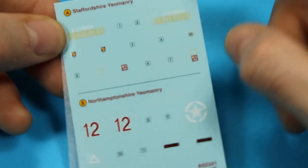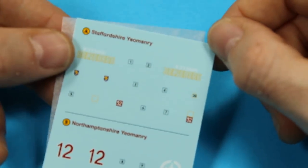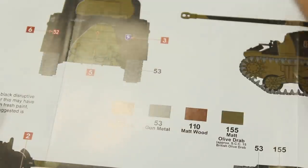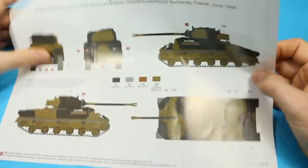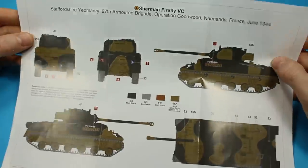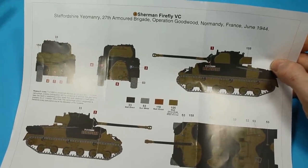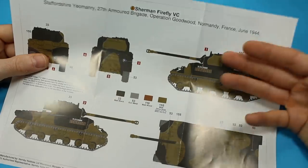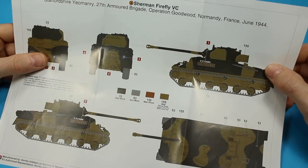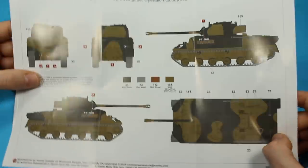Everything you need there, you've got the tactical markings, the whole lot. So again, great attention to detail there. Then we've got our color call-out. You've got Belvedere here, which is from the Staffordshire Yeomanry, which is 27th Armoured Brigade, used during Operation Goodwood in Normandy, France, June 1944.